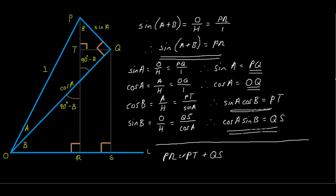And because of this, we can say that sin(A+B), which is PR up here, we can see that, equals PT. And PT is sin A cos B, as we can see here. So, plus QS. And we know that QS is cos A times sin B.